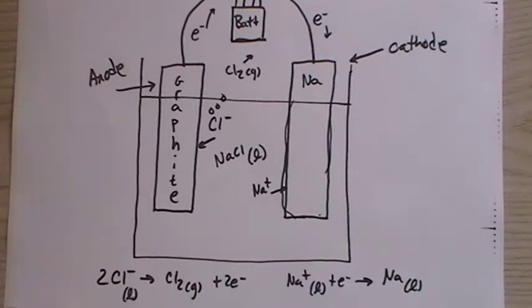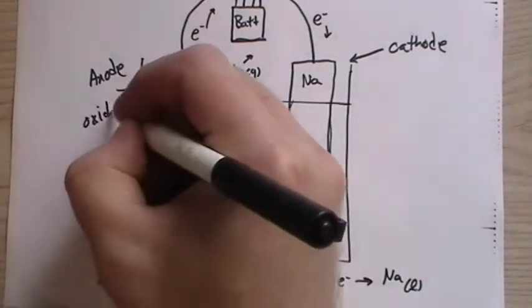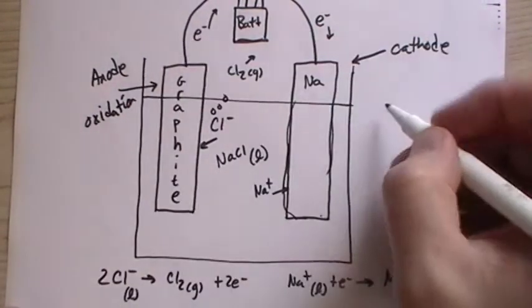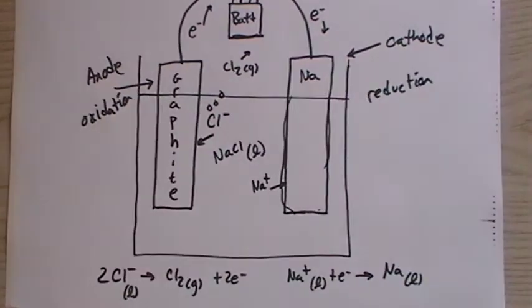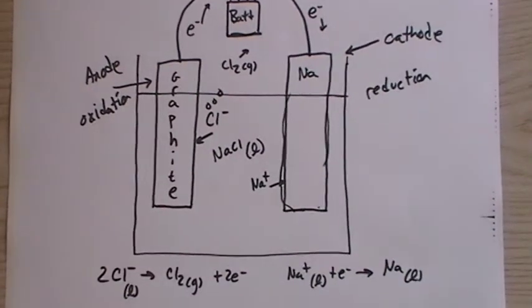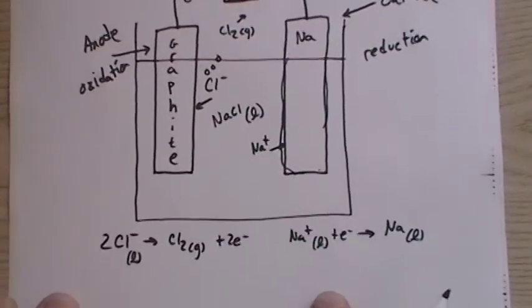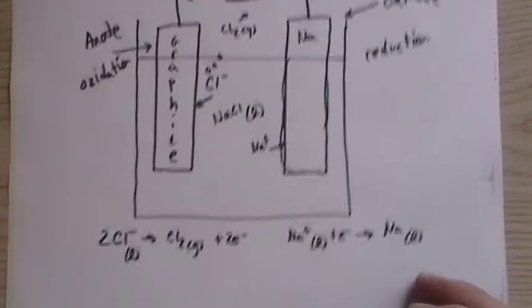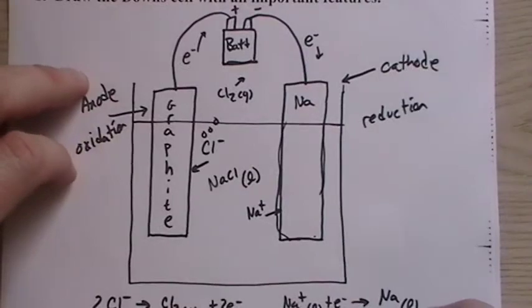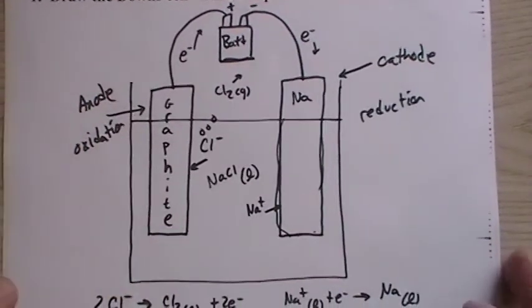Those reactions, the anode, because this is still the oxidation, even though it's being driven, the oxidation is still at the anode. The reduction is still at the cathode. And I think that is about it. You can do the overall equation too if you're asked for that. And that would be the basis of a Down cell, which is a very important cell for us. So that's something you should be able to draw from memory.